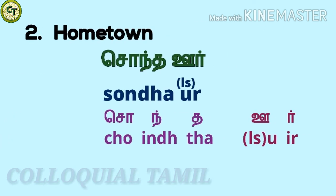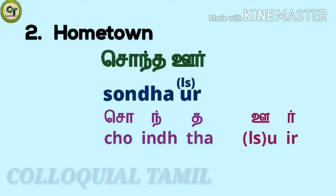'Hometown' in Tamil is 'sondha oor'. For 'sondha': 'cho' a short letter — while speaking, 'cho' may also sound as 'so' in some words — 'ind' a consonant, 'tha' a short letter. For 'oor': 'oo' a long vowel, 'ir' a consonant. Together: oor. So one more time: sondha oor.